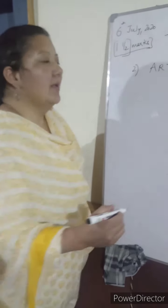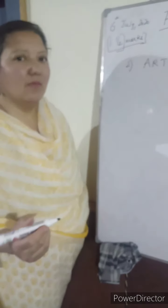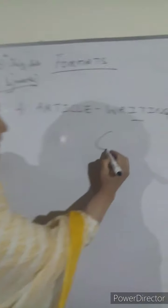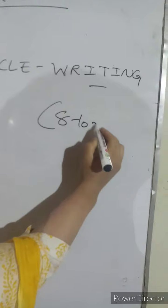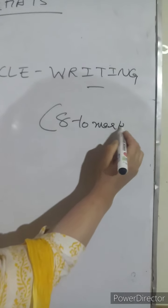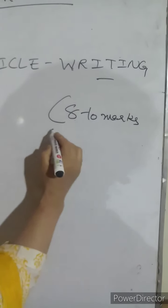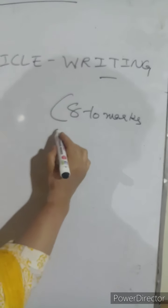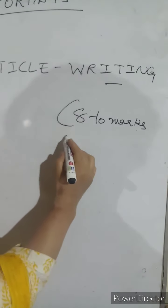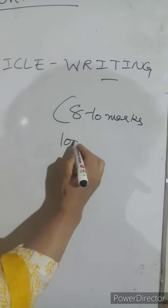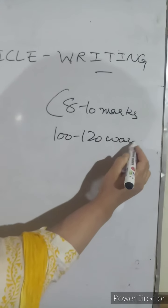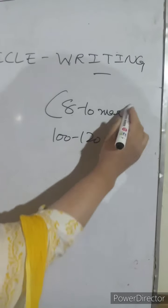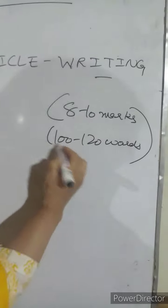Let's start with the weightage of marks. Article writing comes from 8 to 10 marks, and it can be written in 100 to 120 words. Stick to 120 — I would love that.